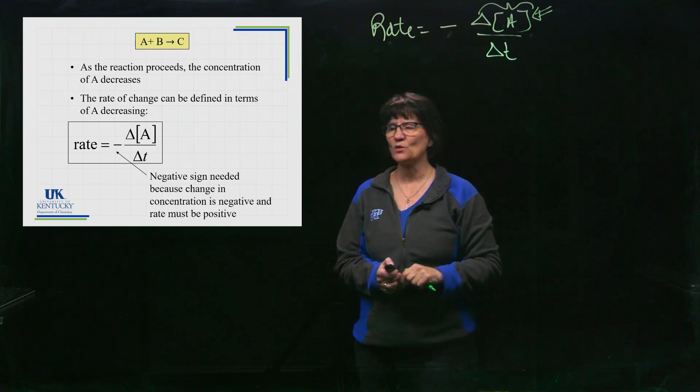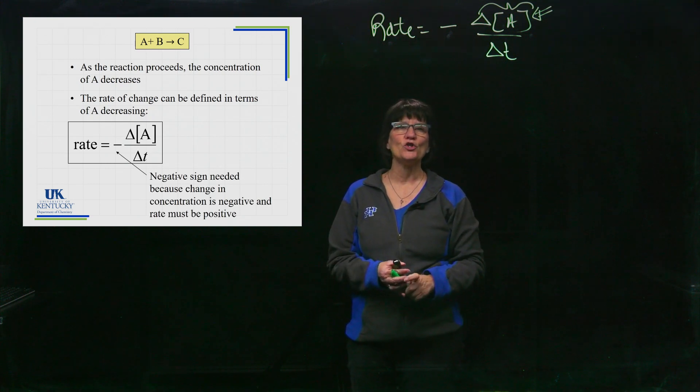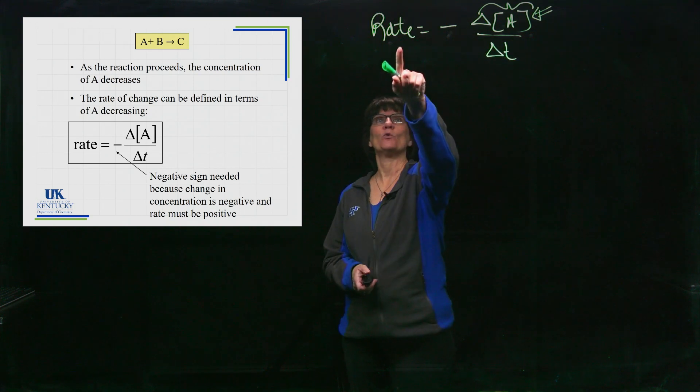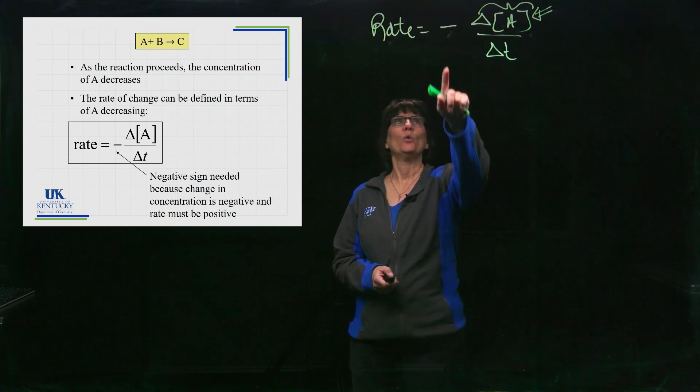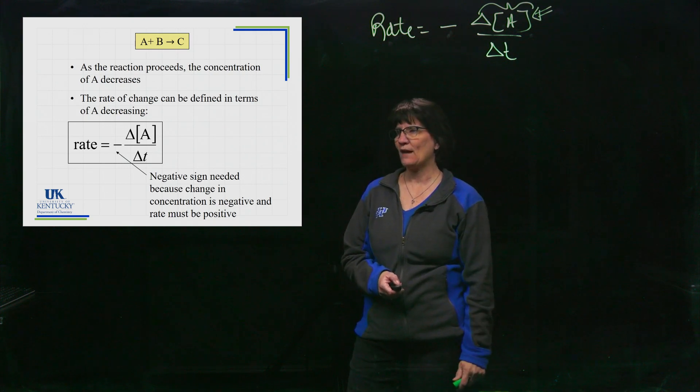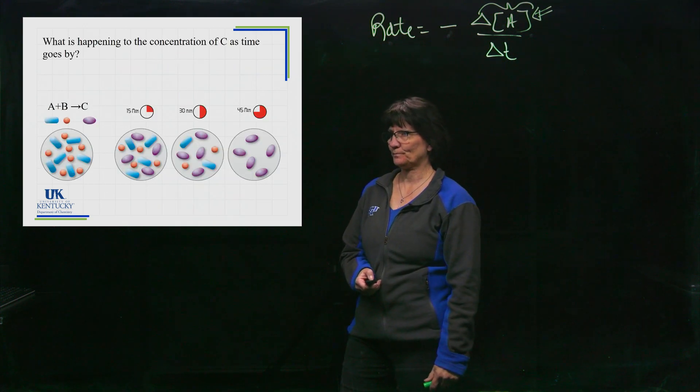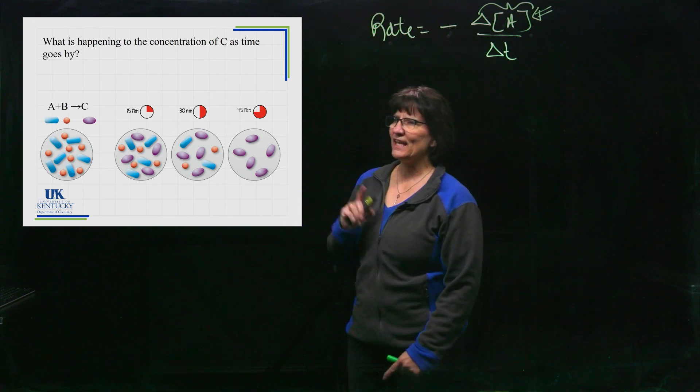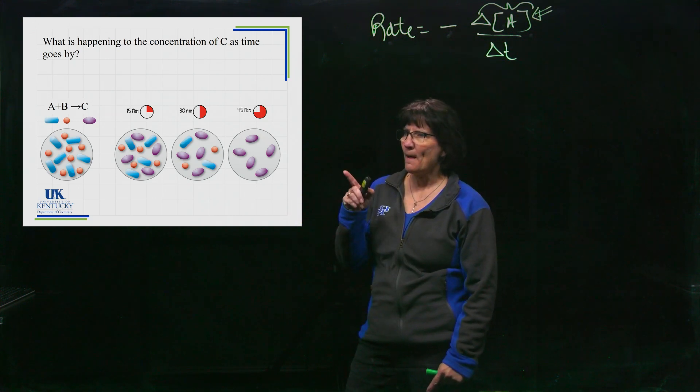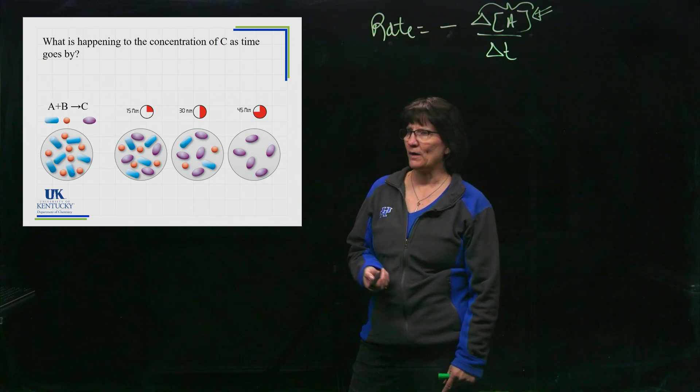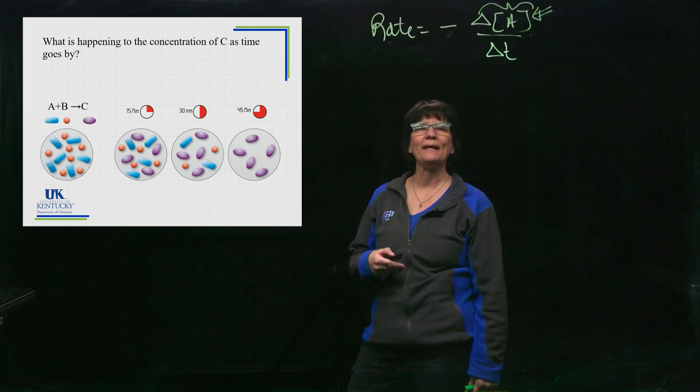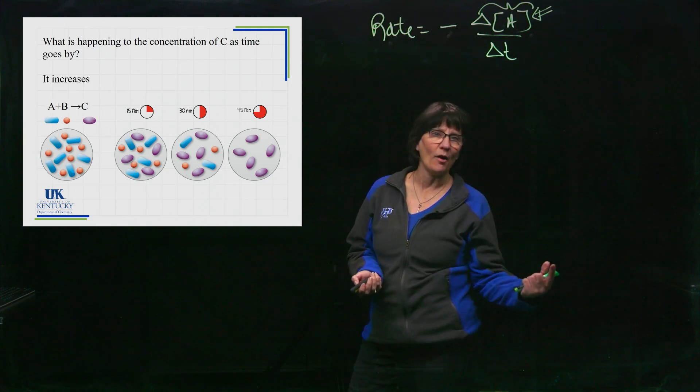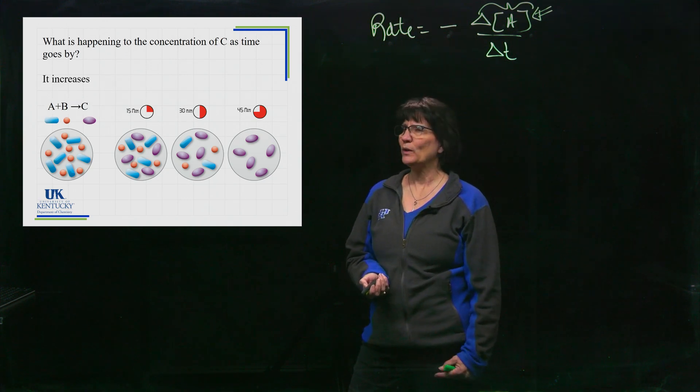Okay, so that's why we need that negative sign in there. If we're going to monitor a reactant and determine the rate of the reaction from it, we'll need that minus sign in order to have rate be a positive value. Now let's zone in on C. C is the purple stuff there, it is being formed, it is being created. So what is happening to its concentration as time goes by? Well obviously it's increasing.